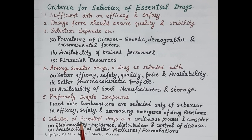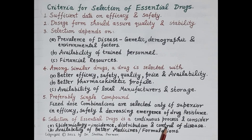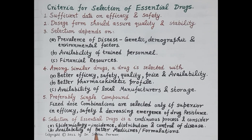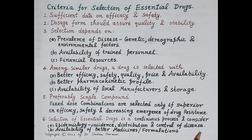It is very important to understand that the selection of essential drugs is not a one-time process — it is a continuous process. It gives consideration to the epidemiology, that is the incidence, distribution, and control of disease in a particular area, as well as the availability of better medications and better formulations because of progress in pharmaceutical technology and research.